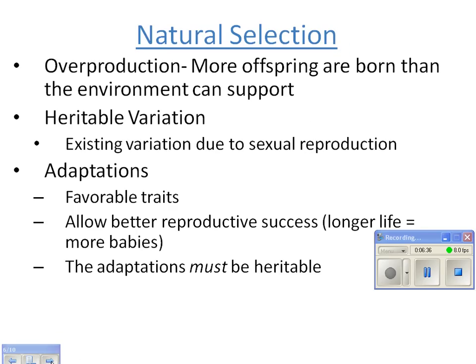Now, the conditions needed for natural selection to occur — there are three main ones: overproduction, heritable variation, and the fact that these variations have to be favorable, which gives them the special name adaptation. Overproduction simply means that more organisms are produced than their environment can handle.